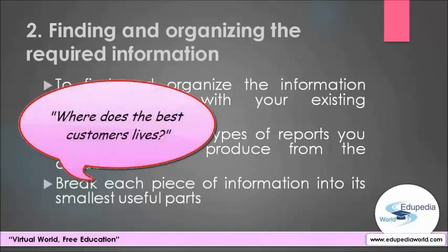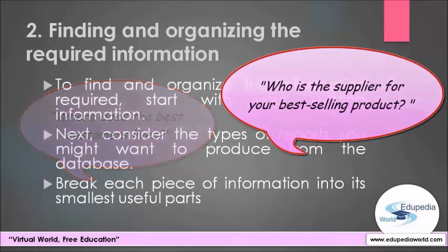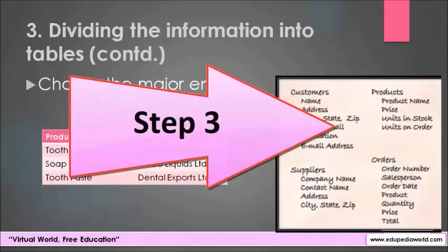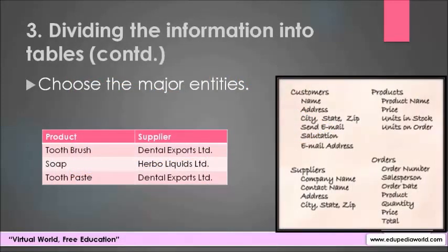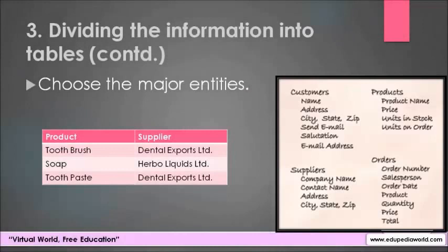Anticipating these questions helps you zero in on additional items to record. After gathering this information, you are ready for the next step. To divide the information into tables, choose the major entities. For example, after finding and organizing information for a product sales database, the major entities are products, suppliers, customers, and orders. Therefore, it makes sense to start out with these four tables: one for facts about products, one for facts about suppliers, one for facts about customers, and one for facts about orders. Although this doesn't complete the list, it is a good starting point.